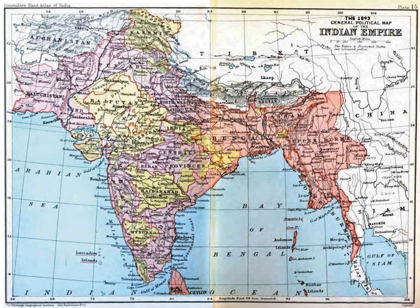A princely state, also called native state, feudatory state, or Indian state for those states on the subcontinent, was a vassal state under a local or regional ruler in a subsidiary alliance with the British Raj. The predominant usage of the term princely state specifically refers to a semi-sovereign principality on the Indian subcontinent during the British Raj that was not directly governed by the British, but rather by a local ruler, subject to a form of indirect rule on some matters.